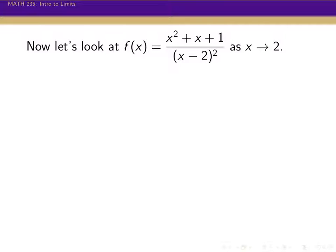So now let's look at another rational function. We have x squared plus x plus 1, divided by (x minus 2) squared. This time we're going to look at it as x goes to 2. Again, 2 is not in the domain of this rational function, so we can't actually plug in 2. But that's the only x value we can't plug in — every other x value we can plug in and get a value out of this function.